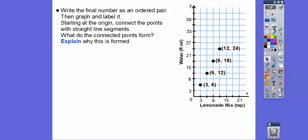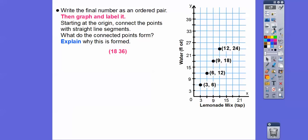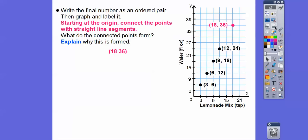Here's a series of questions we'll do in order. First, write the final number as an ordered pair — that final number was 18 teaspoons for 36 fluid ounces, so there it is: 18 comma 36. Next, graph and label it. Here's 15, here's 18, and 36 would be way up here — right about there between 33 and 39. Then, starting at the origin, connect the points with a straight line segment — we go from here to here, remembering line graphs from before.